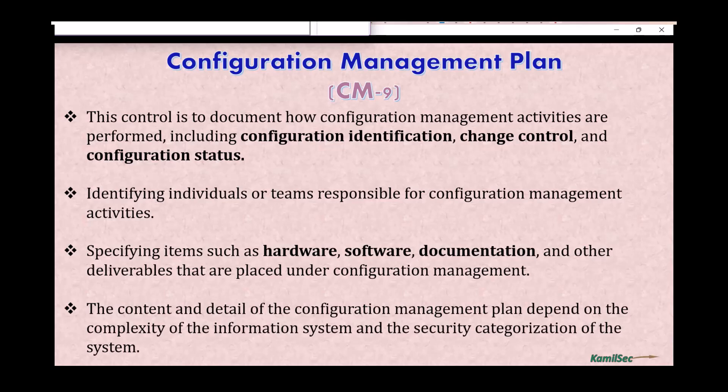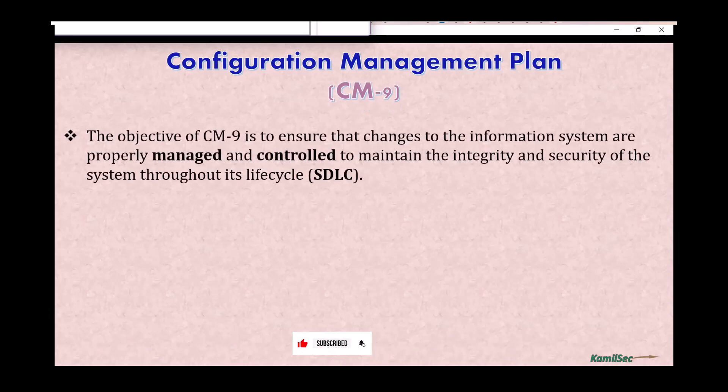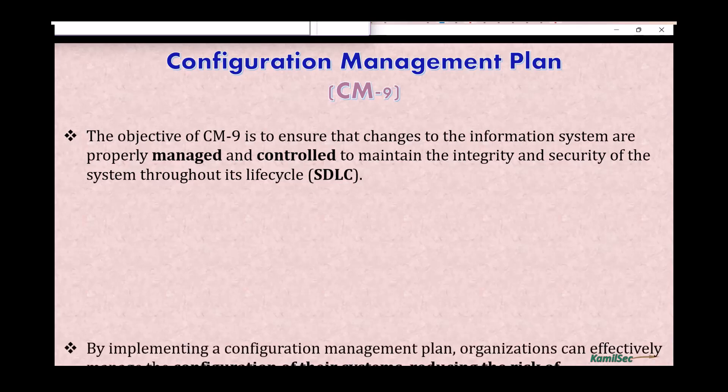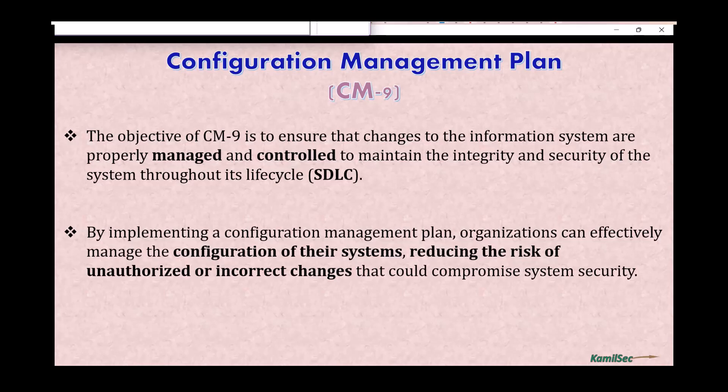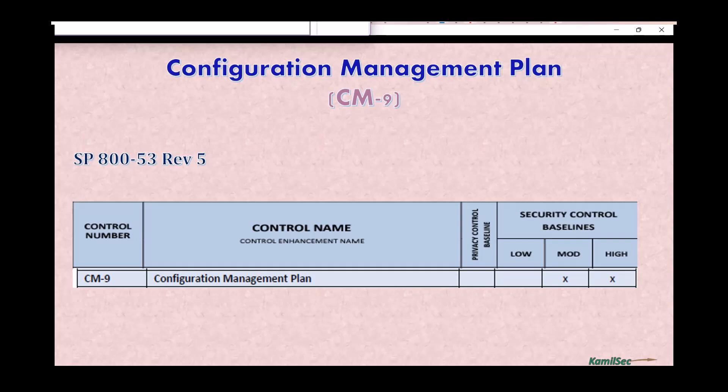The content and detail of the configuration management plan depend on the complexity of the information system and the security categorization of the system. The objective of CM9 is to ensure that changes to the information systems are properly managed and controlled to maintain the integrity and the security of the system throughout its lifecycle. By implementing a configuration management plan, organizations can effectively manage the configuration of their system, reducing the risk of unauthorized or incorrect changes that could compromise system security.